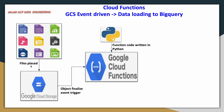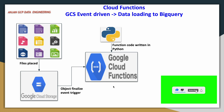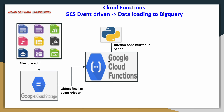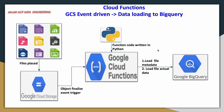As mentioned, there are different event types, and ours is object finalized. We will capture the metadata related to the event and the file. We will also try to load the data available in that file into a BigQuery table. What I will do is place a few CSV files into a Google Cloud Storage bucket, and once a file is placed, this Cloud Function will be triggered based on the event, capture the metadata, and write it into BigQuery.